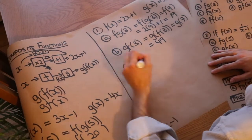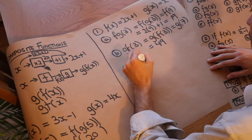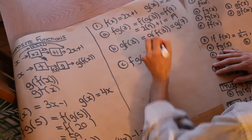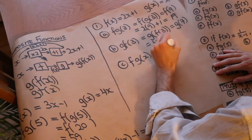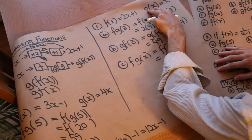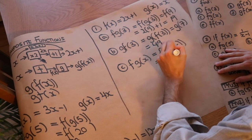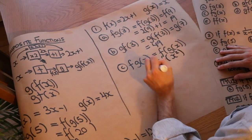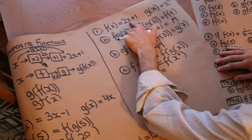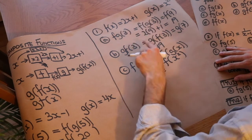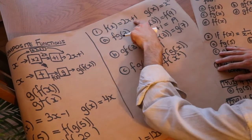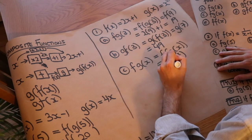Now let's find f(g(x)). The first step is always to put brackets around the inner function: f(g(x)). g(x) = x², so we do f(x²). Then f(x²) = 2 times x² plus 1, substituting x² for each occurrence of x. So we get 2x² + 1.